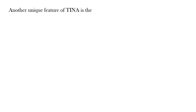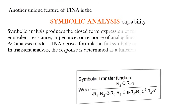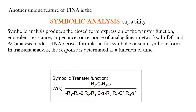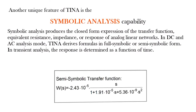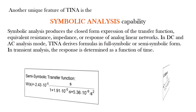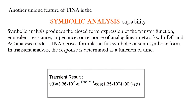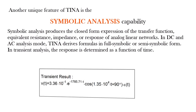Another unique feature of TINA is its symbolic analysis capability. Symbolic analysis produces the closed-form expression of the transfer function, equivalent resistance, impedance, or response of analog linear networks. In DC and AC analysis mode, TINA derives formulas in full symbolic or semi-symbolic form. In transient analysis, the response is determined as a function of time.